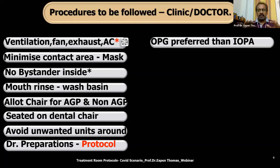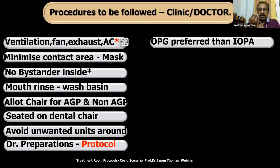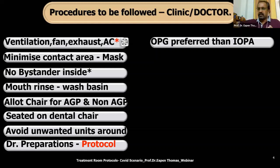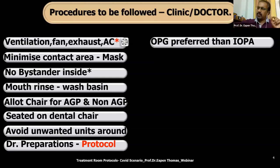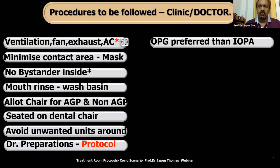If a radiograph is needed, prefer an extra-oral X-ray over an intraoral periapical (IOPA) film. Intraoral films contact saliva, risk contaminating the operatory and the X-ray lab, and spread contamination through the assistant's handling. If you have an RVG, you may use it provided the entire sensor sleeve and cable length are covered with a disposable sleeve without any tear or puncture. Otherwise, advise the patient to get an extra-oral radiograph externally and return.